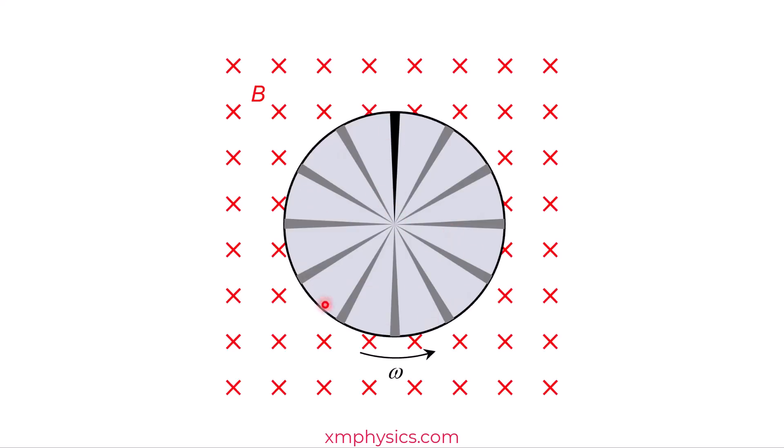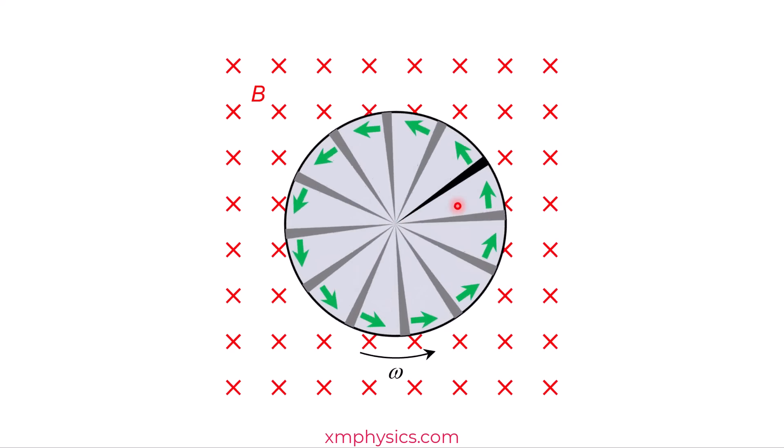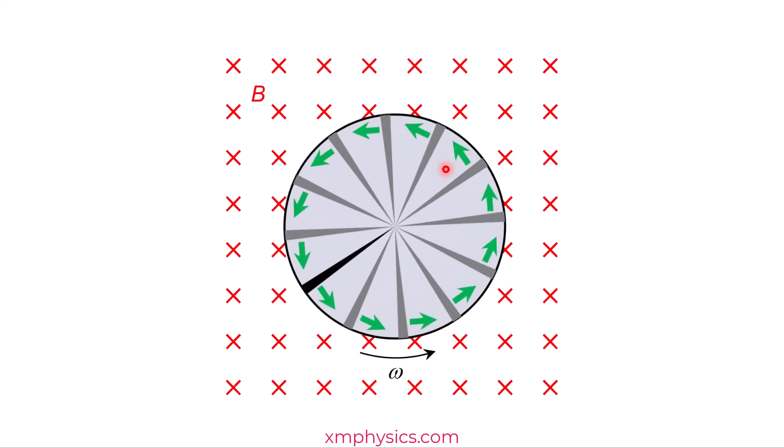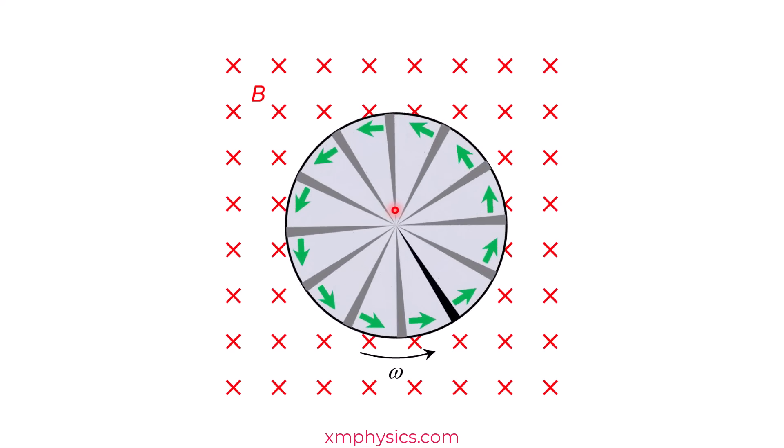So when the disc is spinning, it's like all these wires are moving, cutting the magnetic flux. Can you see? Every wire, as the disc rotates, is actually a conductor moving in a magnetic field. So they're cutting the magnetic flux.